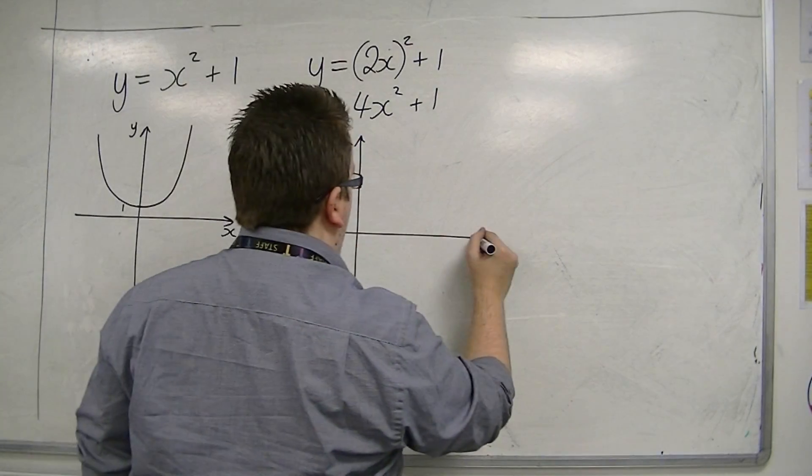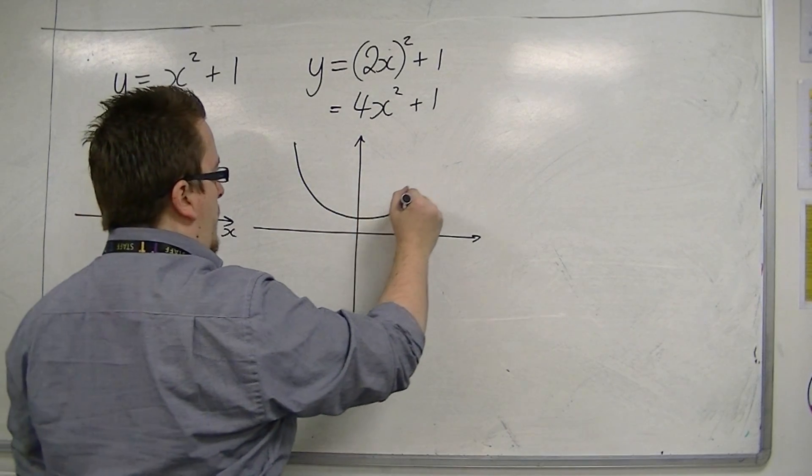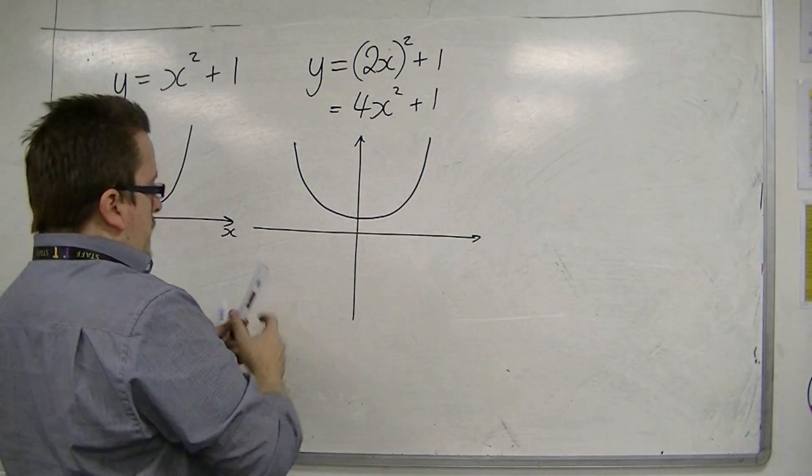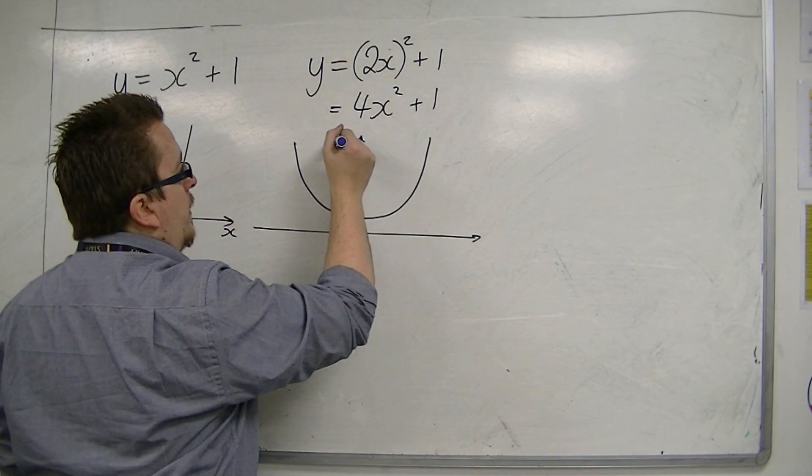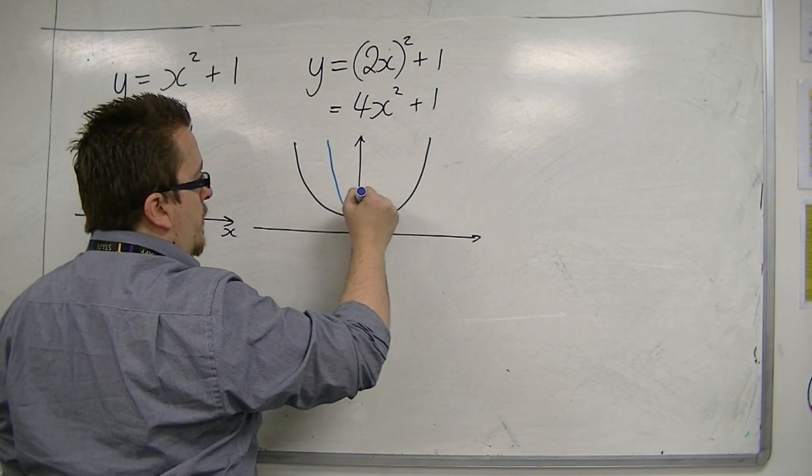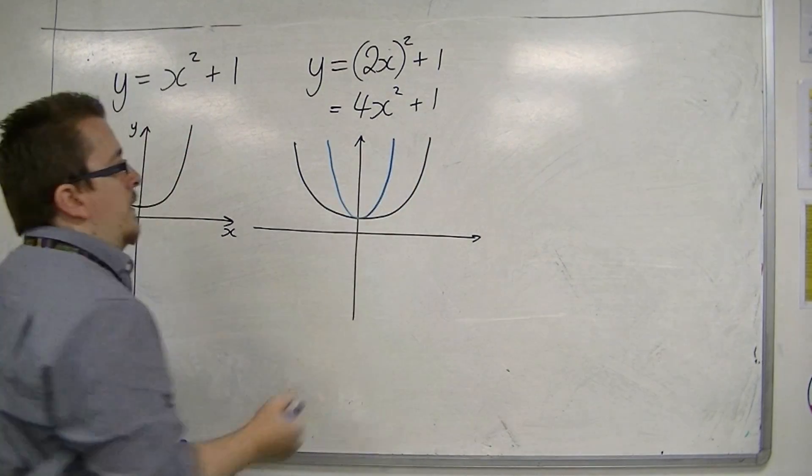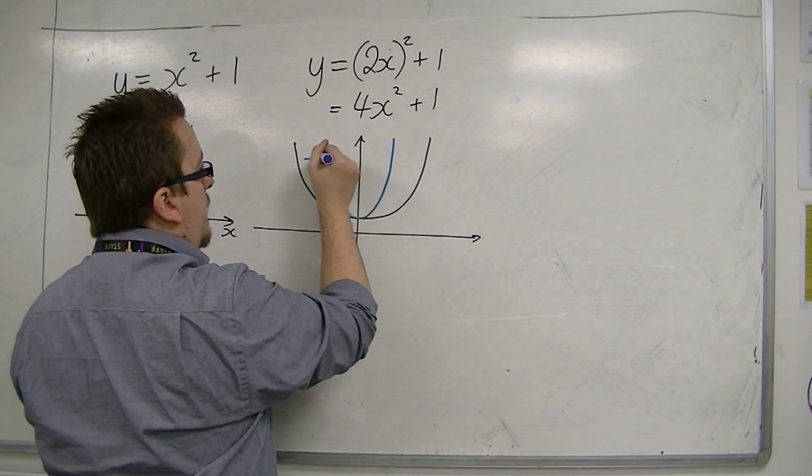Let's see what that looks like. If we have our original curve, then y equals 4x-squared plus 1 will look something like this. It will still go through 1, but it will be tighter, effectively.